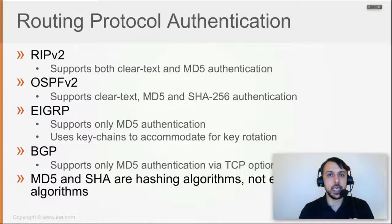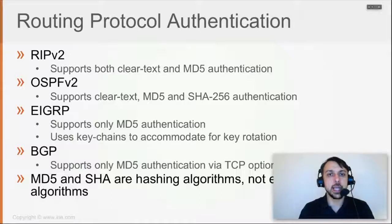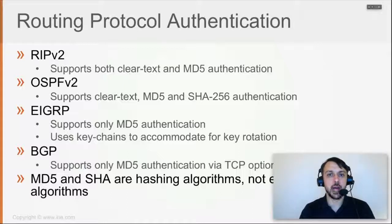The authentication done with MD5 or SHA means that within the routing protocol packets — whether OSPF updates, RIP updates, or BGP updates — an MD5 hash is injected and agreed upon between the two peers. This hash is used to authenticate the packets. If packets fail authentication, they are dropped because they are considered spoofed or illegitimate routing protocol updates injected by an attacker.